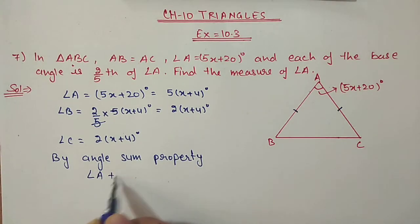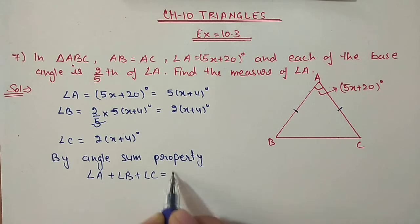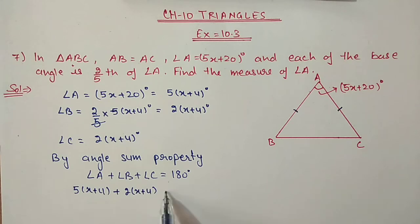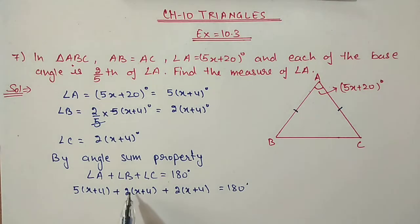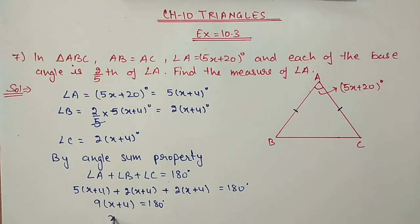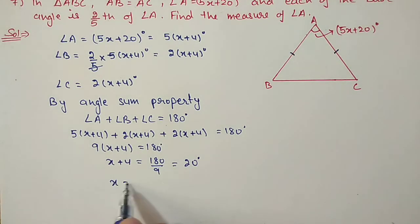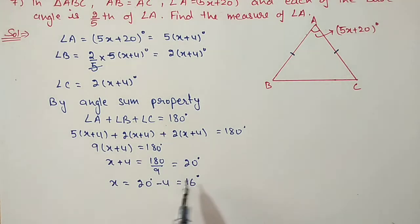By angle sum property, angle A plus angle B plus angle C is equal to 180 degrees. A is given as 5x plus 20, B is 2x plus 4, and C is 2x plus 4, which equals 180 degrees. So 5 plus 2 plus 2 gives 9x, and 20 plus 4 plus 4 gives 28. Therefore 9x plus 28 equals 180, so x plus 4 equals 20 degrees, giving x equals 16 degrees.